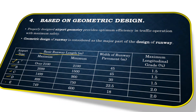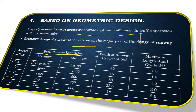For airport type A, the maximum runway length is over 2100 meters and the minimum is also 2100 meters. The runway has a threshold at one end from which the flight takes off. The classification is done based on what the runway length should be.